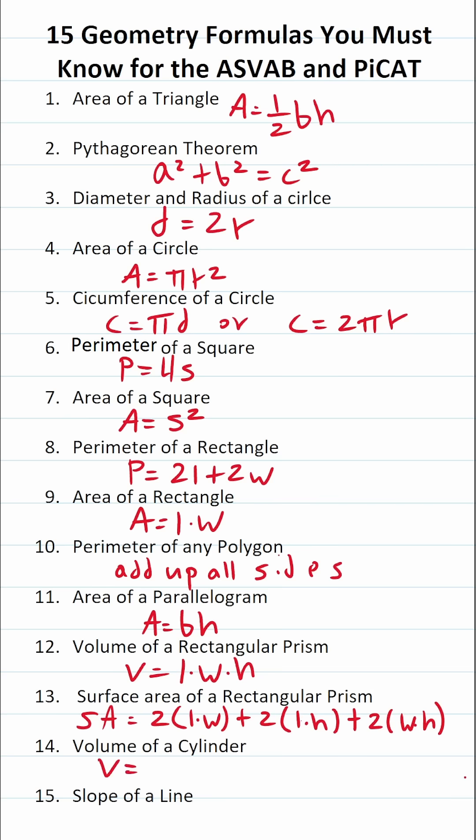Volume of a cylinder is going to be pi r squared times height. And finally, the slope of the line is going to be y2 minus y1 all over x2 minus x1.